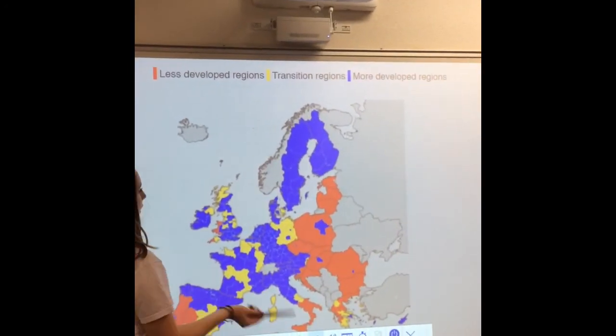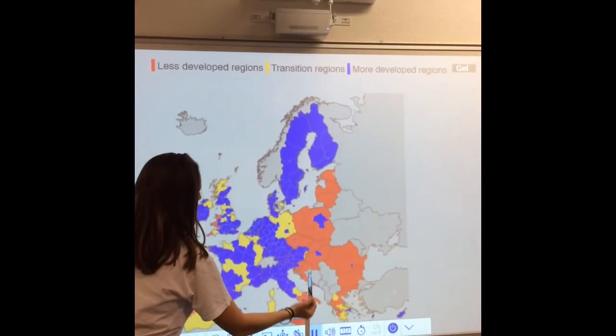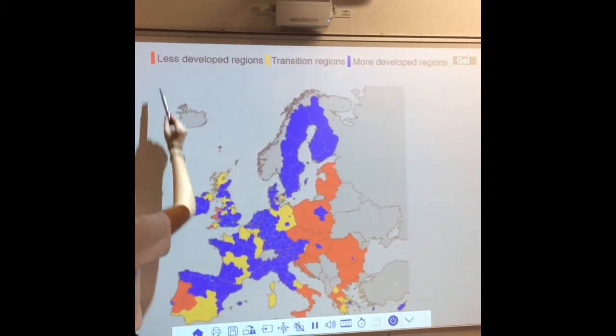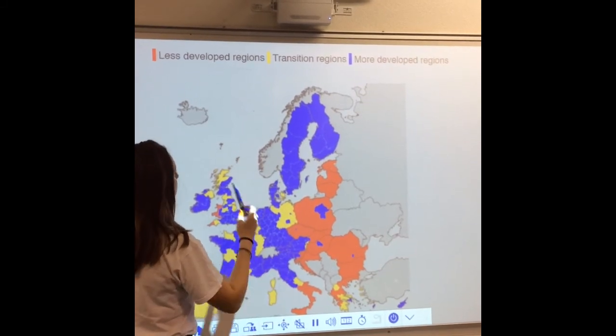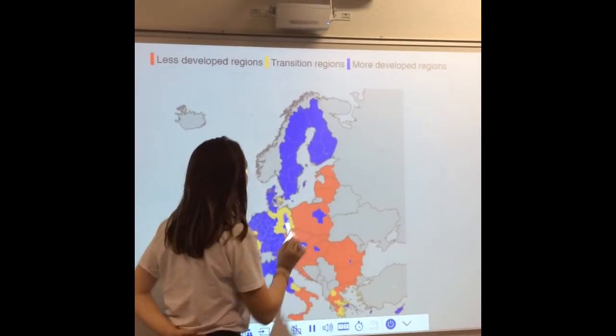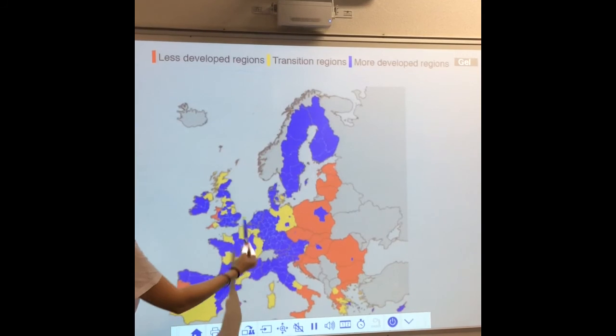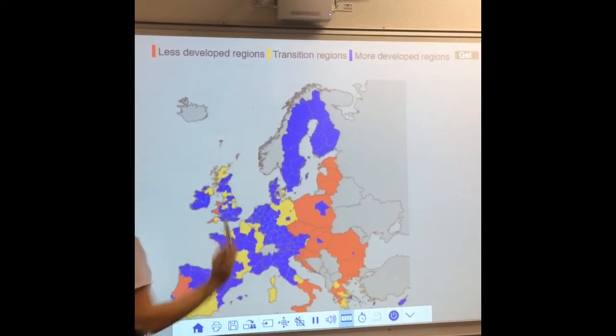So, this is a map of the European member countries. In red, we can see the less developed regions. In yellow, we can see the transition regions. And in blue, we can see the more developed regions.